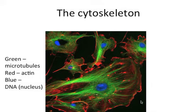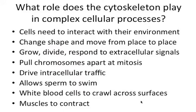You can see that this cell outline is right here — that's all actin. We will learn about how the dynamic properties of actin are involved in movement. Why would a cell need to move? A kidney cell might not be moving very much, but there are some cells that move a whole lot. What kind of cells might need to move? Immune cells — blood cells, right.